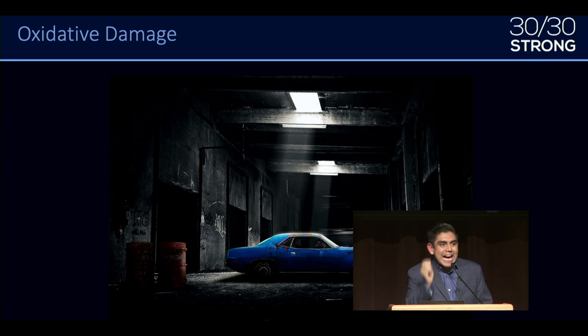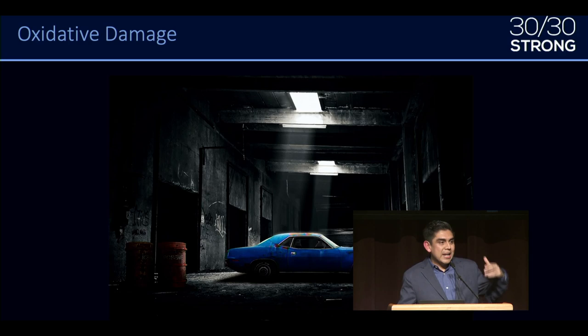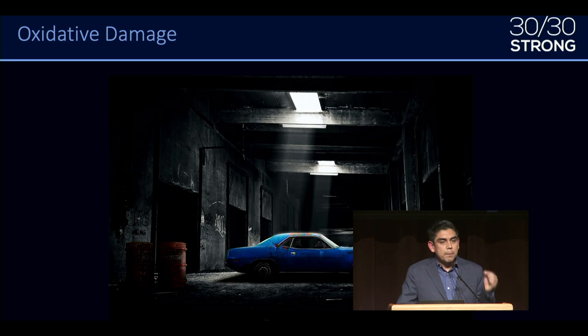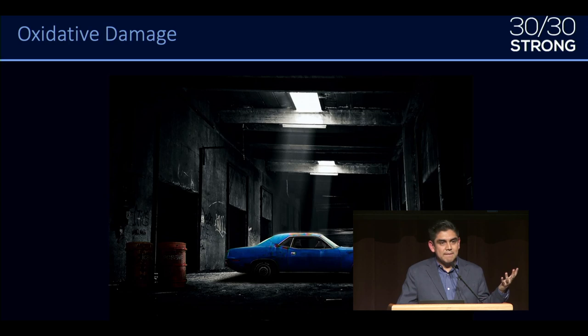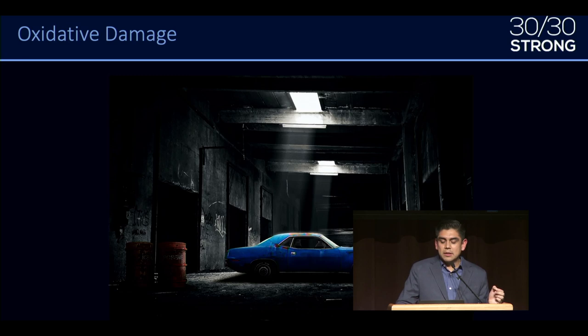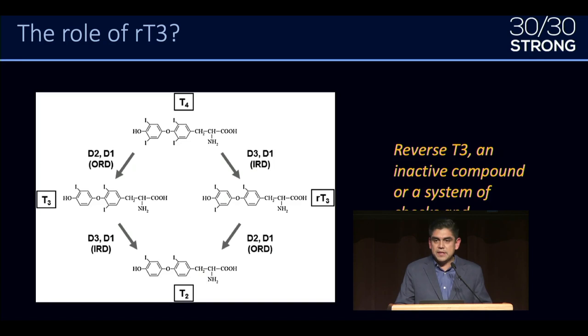Our body starts coming up with evolutionary mechanisms to prevent this. We have very tight regulation on how we utilize thyroid hormone. In some cases, we are going against these evolutionary mechanisms to try to correct a problem that was originally a very sophisticated way of our body dealing with inflammation, stress, circadian rhythm mismatch, infection, or a toxic environment. Trying to decrease the amount of reverse T3 is not a good strategy, and I'm going to show you why.